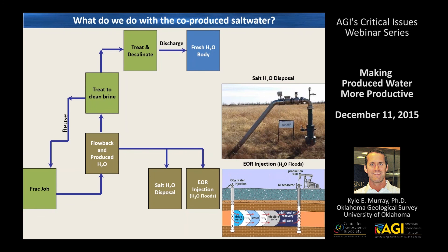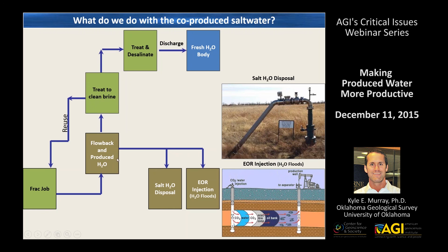So what do we do with produced water once it comes out of the ground? This is a portion of a diagram showing the flow of water through the oil and gas sector. In many cases, operators are treating it to clean brine and reusing it for frack jobs and additional drilling and completion. In other cases, it may be used for enhanced oil recovery and water floods. Today I'm going to wrap up by summarizing where the water goes — specifically into saltwater disposal wells in Oklahoma.